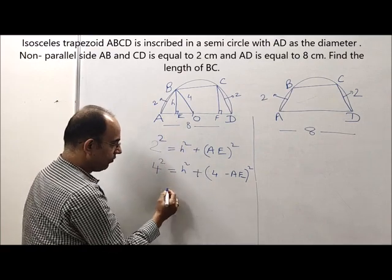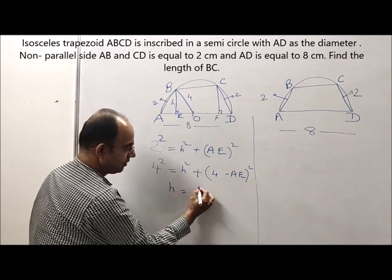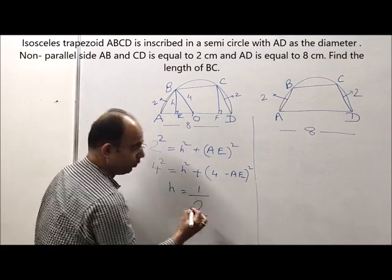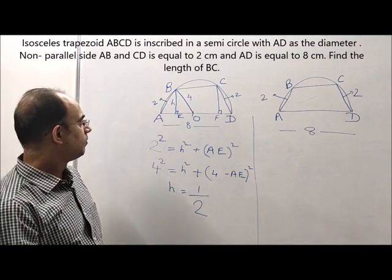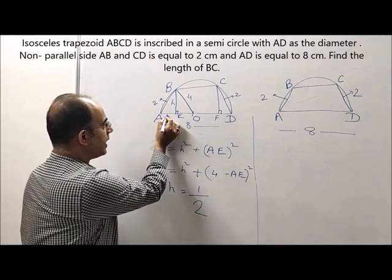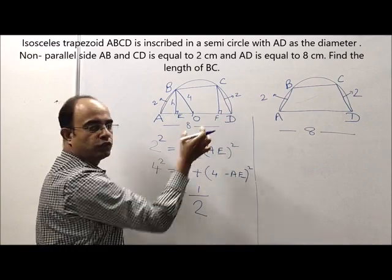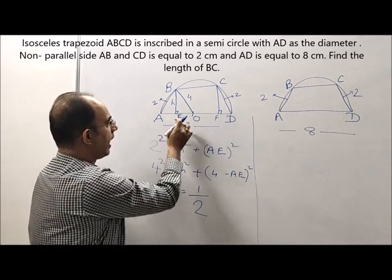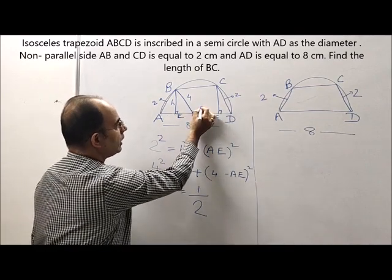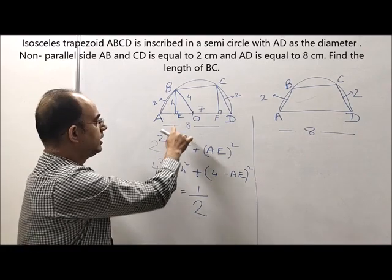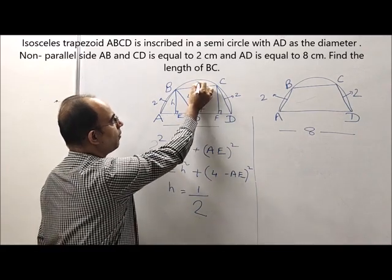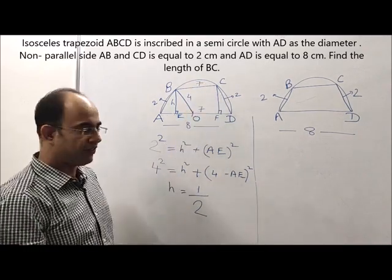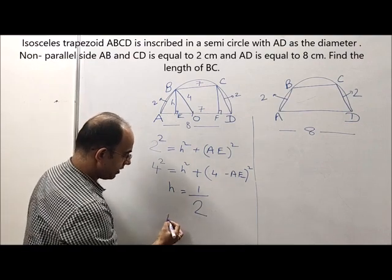Now if I solve these two equations, I get the value of H as 1 by 2. Now this is 1 by 2, so F would be also equal to 1 by 2. Hence EF is equal to 7.